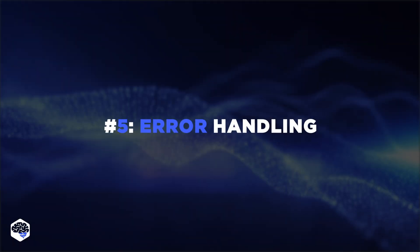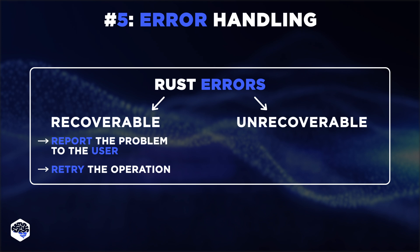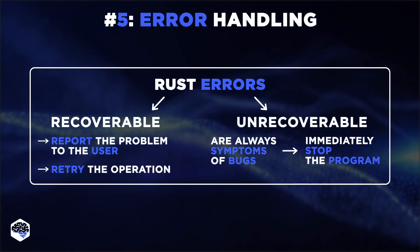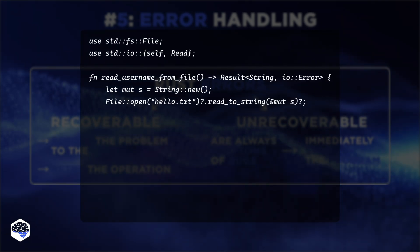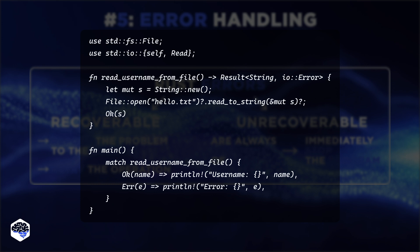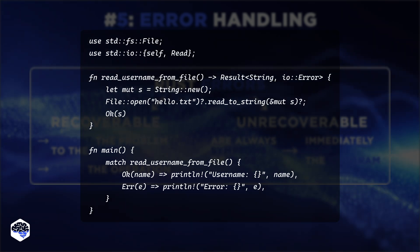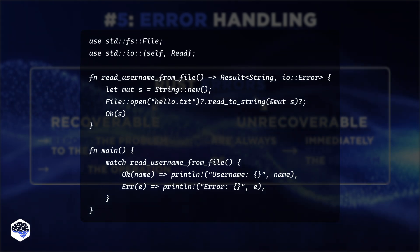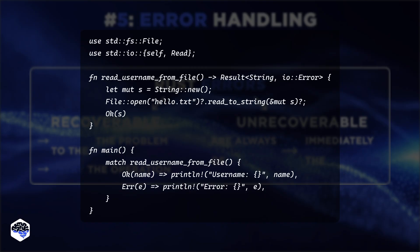Moving on, Rust has a robust error handling mechanism that encourages developers to handle errors explicitly, making the process clear and concise. This Rust code defines a function, readUsernameFromFile, which attempts to read the contents of a file named hello.txt and returns either the file's contents as a string or an error. In the main function, it calls readUsernameFromFile, printing the username if successful or an error message if there's an issue.